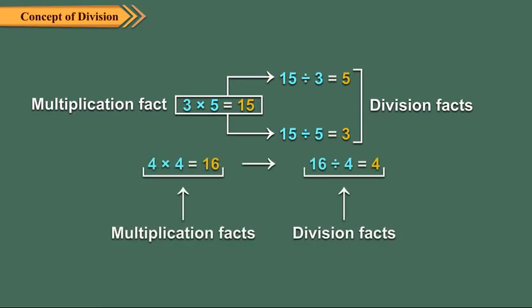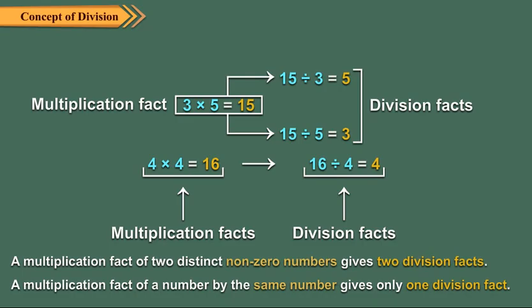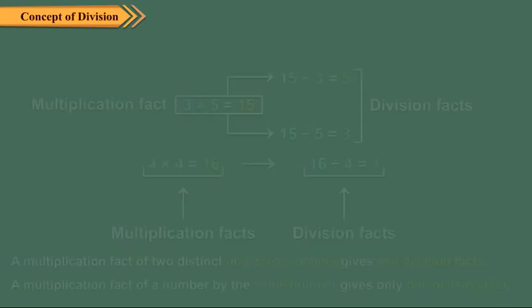Here, it is not possible to get two division facts because both the numbers multiplied are the same. A multiplication fact of two distinct non-zero numbers gives two division facts. A multiplication fact of a number by the same number gives only one division fact. The following examples make the idea more clear.